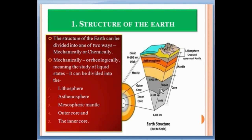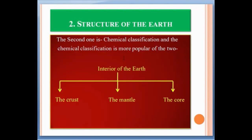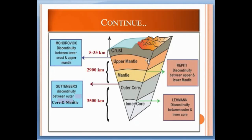The second classification is chemical. The chemical classification is actually more popular of the two and is more accepted among scientists. This classification divides the Earth into the crust, the mantle, and the core. In this video we talk about this classification, which is more acceptable. See here — this is the interior of the Earth, or the structure of the Earth.